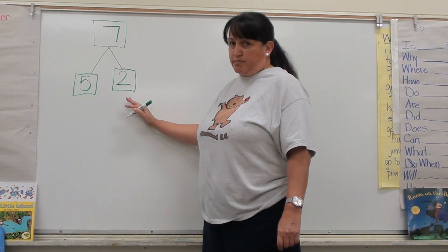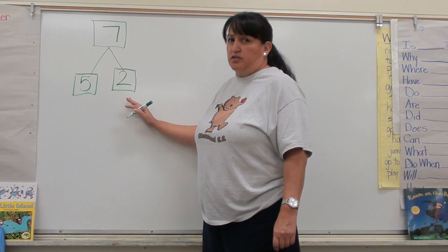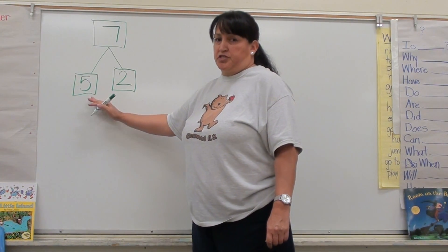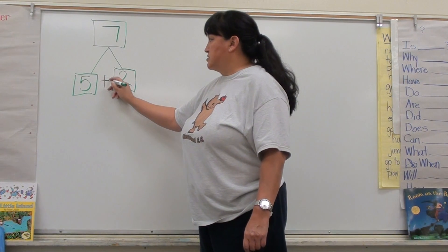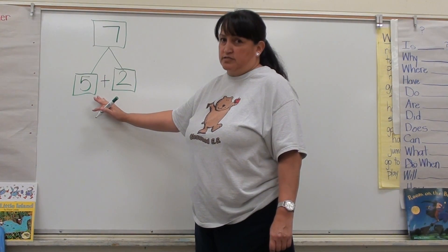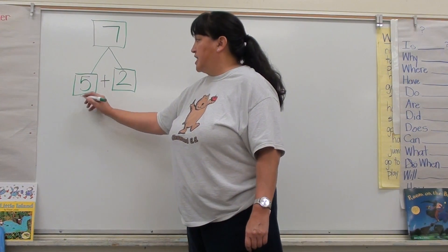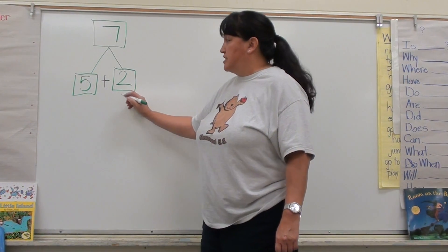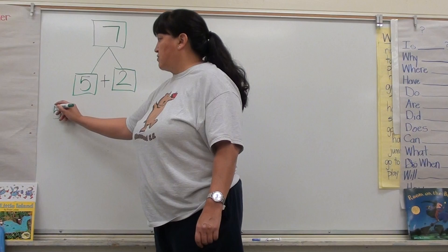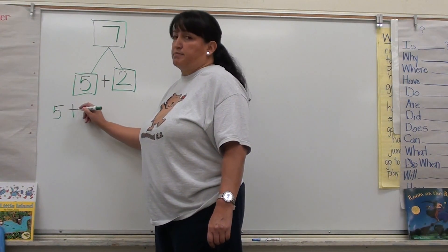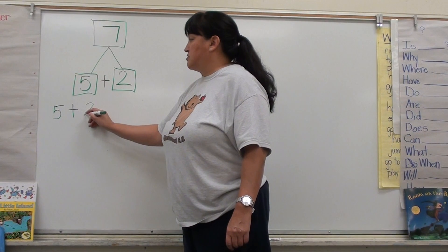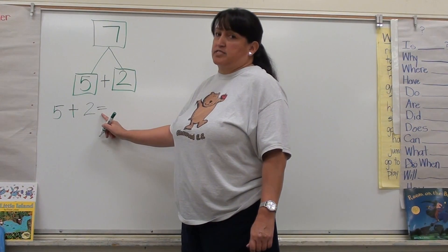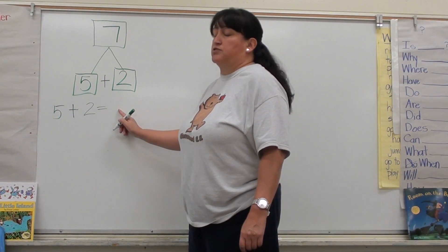With number sentences, we need symbols and we need numbers. Since these are my parts, I'm going to put these two together and put the symbol in between. This will give me five plus two, and this can give me an addition sentence. I'll write the five first, write my symbol plus, write my two, and this is my equal sign.